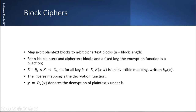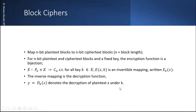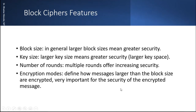It can also be written as E subscript k in brackets x, using general notation. The inverse mapping is the decryption function, given as y = D subscript k of x — meaning if you decrypt, you get y. At the end, y and x must correspond: x is the ciphertext, and the decryption result y should equal the original plaintext Pn under key k.